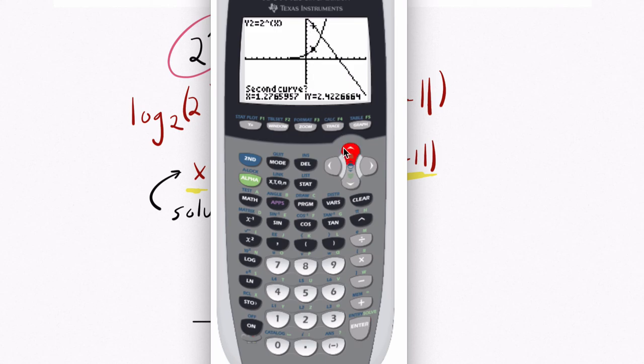And I see it jumps to the second curve right there. If it doesn't do that automatically, you can press up and down to toggle back and forth. Now it has my second curve. Enter. And then for guess, I just enter a third time. It gives me good approximations. 2.55. All right.